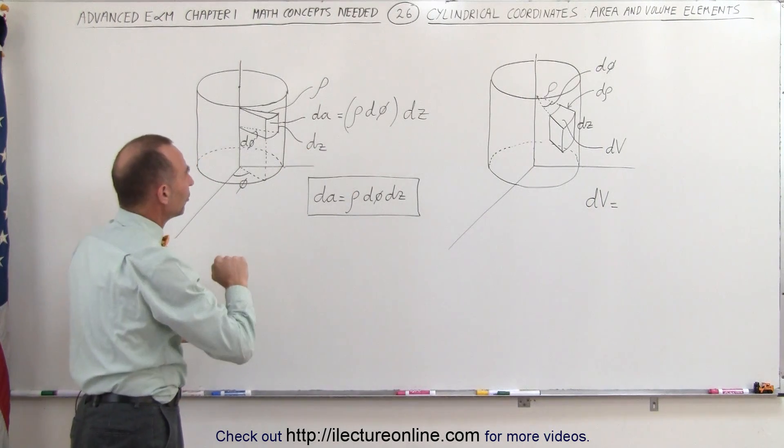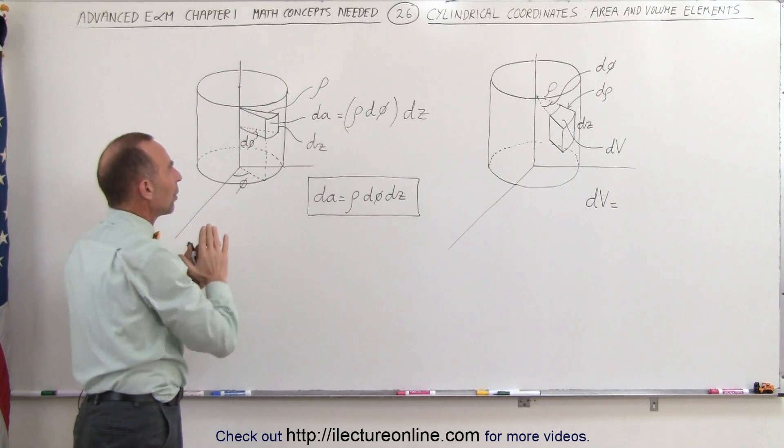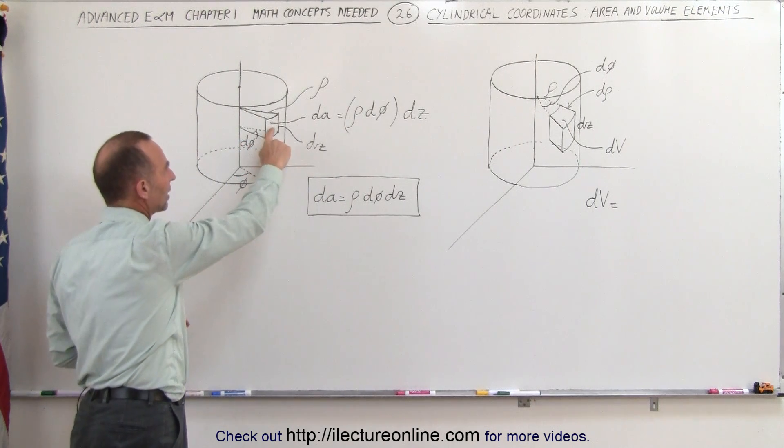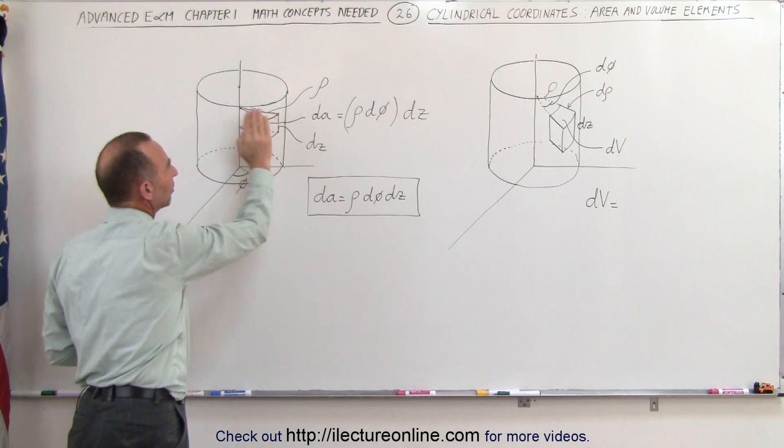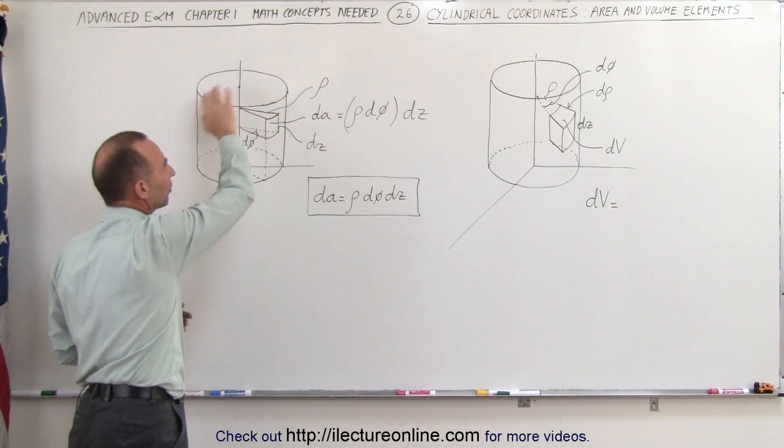Here we have two cylinders. On the first cylinder we want to draw an area element. We have it right here, it's called dA, and assume that to be on the surface of the cylinder right here.